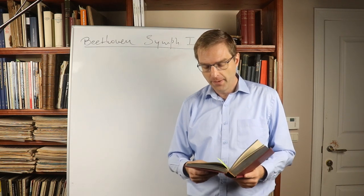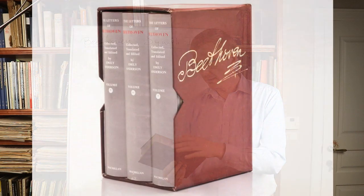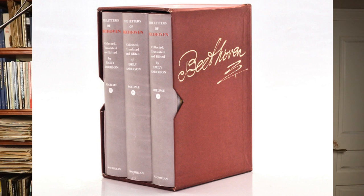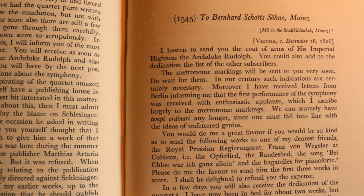Here's a letter of 1826, very interestingly talking on the tempo ordinario. I quote from Letters of Beethoven, a very interesting edition by Emily Anderson. He writes in December 1826 to Bernard Schott in Mainz: The metronome markings will be sent to you very soon. Do wait for them. In our century such indications are certainly necessary. Moreover, I have received letters from Berlin informing me that the first performance of the symphony was received with enthusiastic applause, which I ascribe largely to the metronome markings.